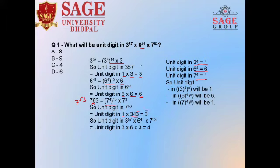Unit digit of 3 to the power 57 is 3. Unit digit of 6 to the power 41 is 6. Unit digit of 7 to the power 63 is 3.